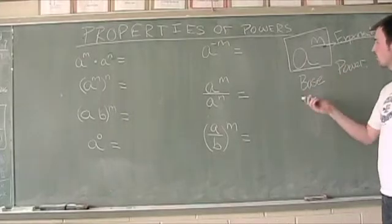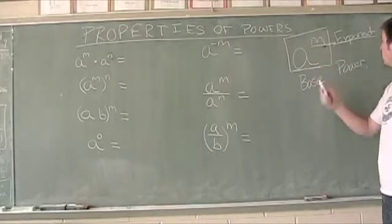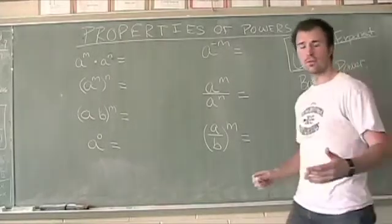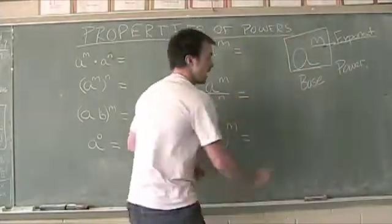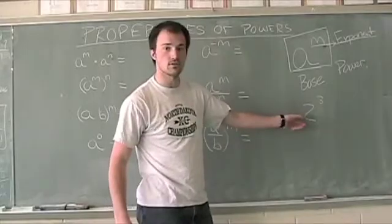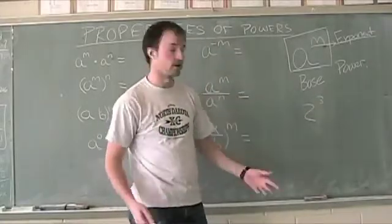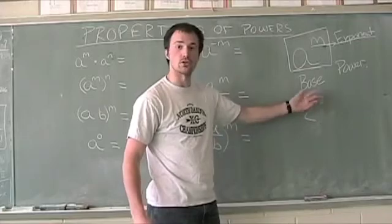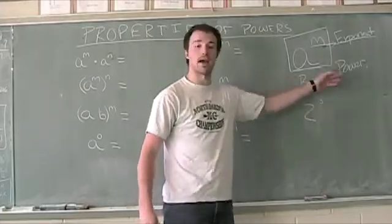When we're talking about powers, we've got a base and an exponent. So if we had something like 2 cubed, here 2 is the base and 3 is our exponent. 2 to the 3rd, which is what we call it, is that power.